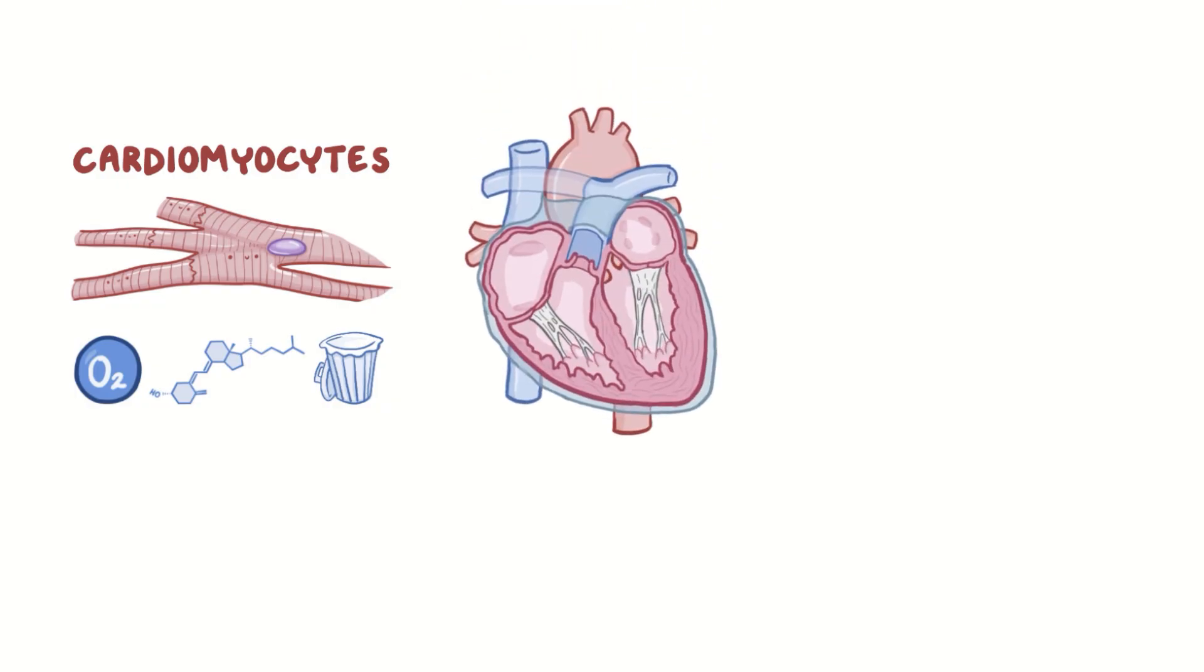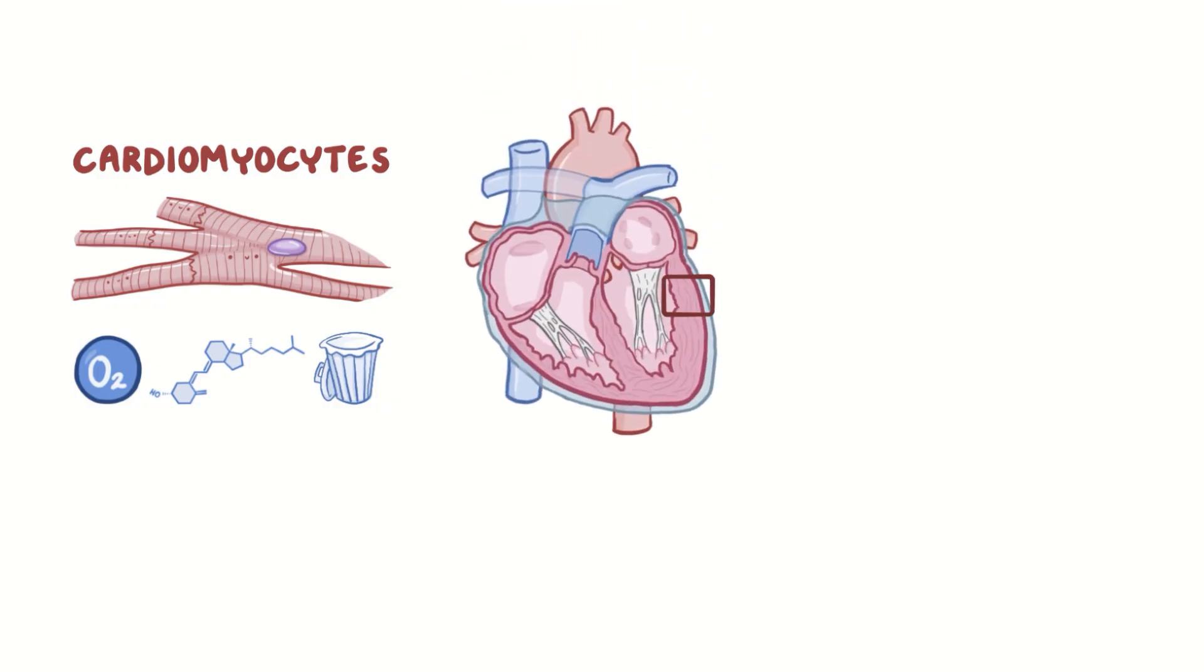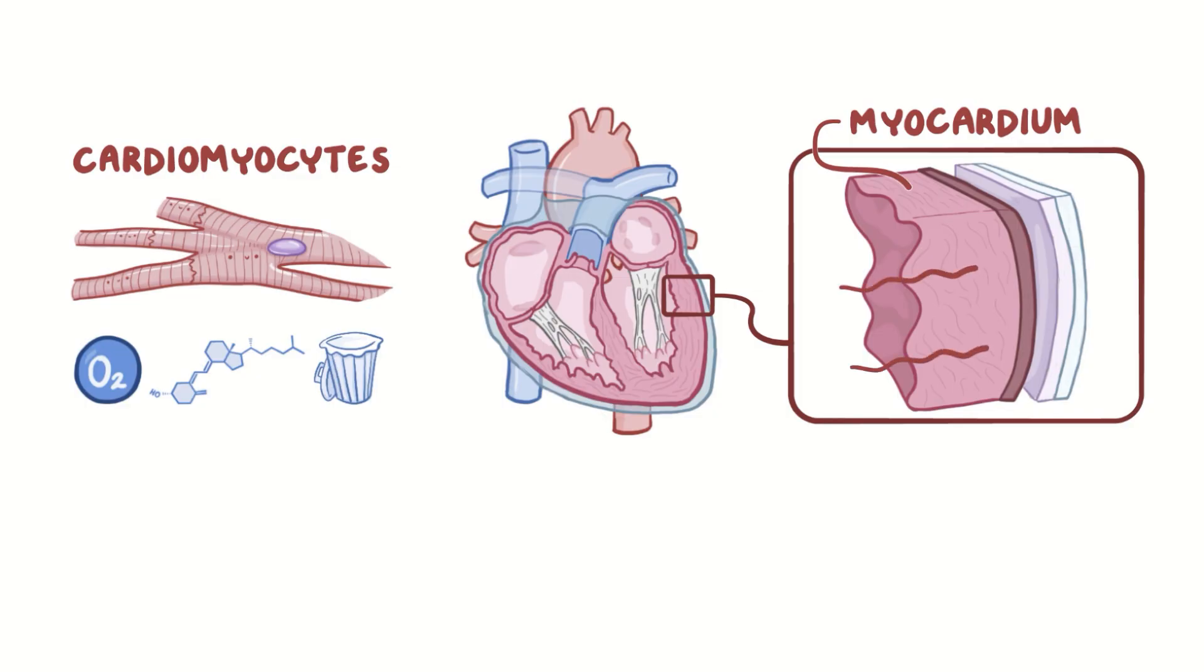Although the heart is continually pumping blood throughout its chambers, the myocardium is too thick for the diffusion of blood to happen effectively. So instead, the coronary circulation provides an efficient way for the exchange of substances to occur.